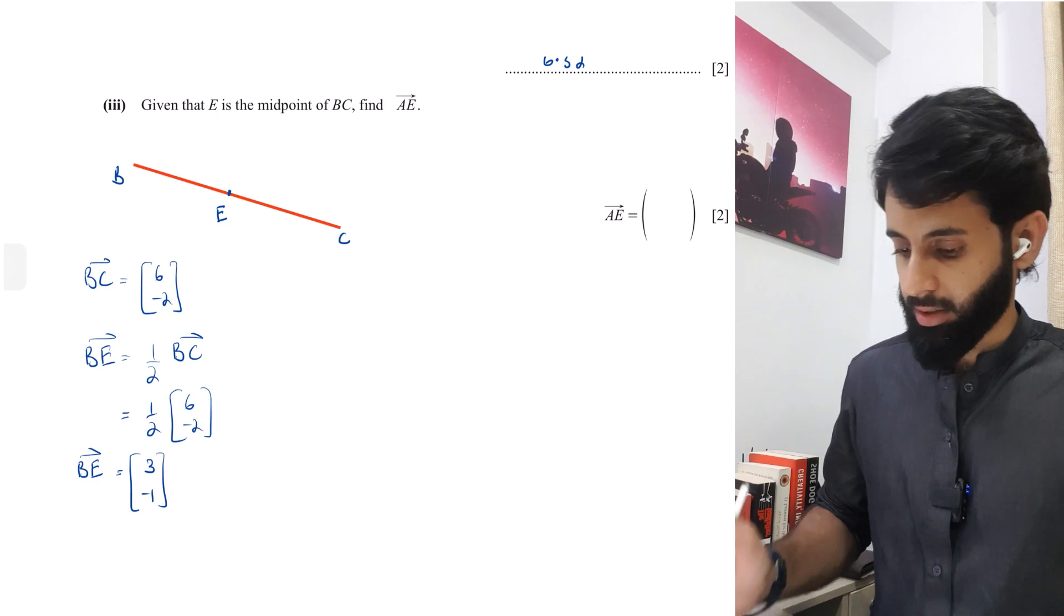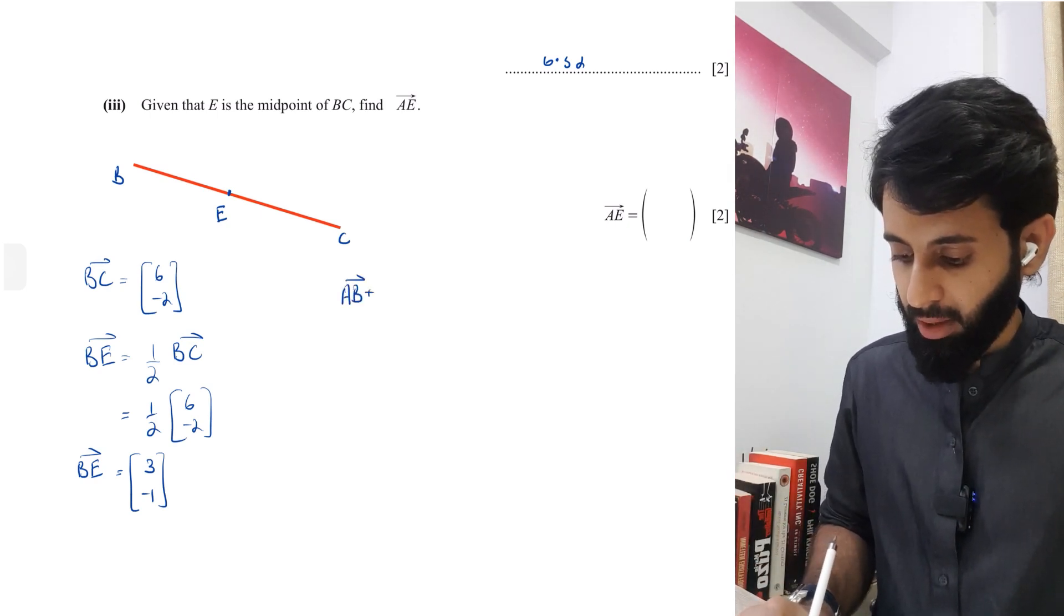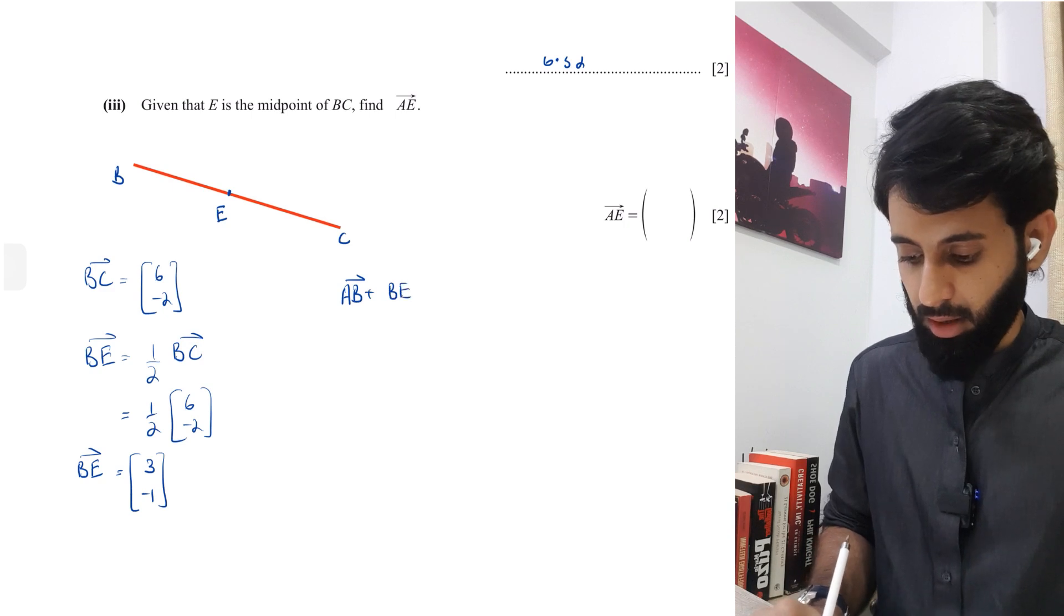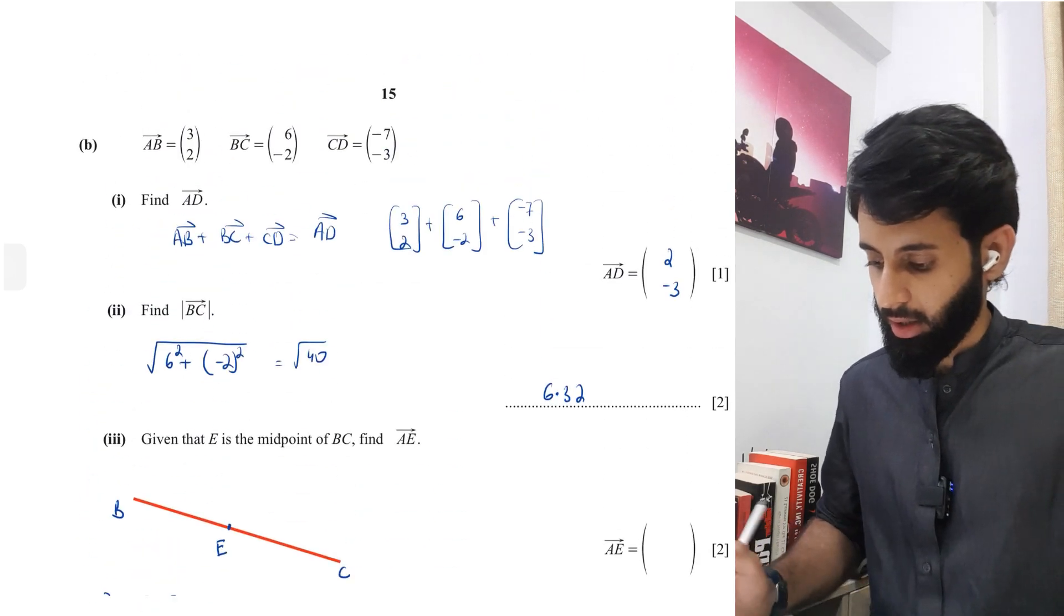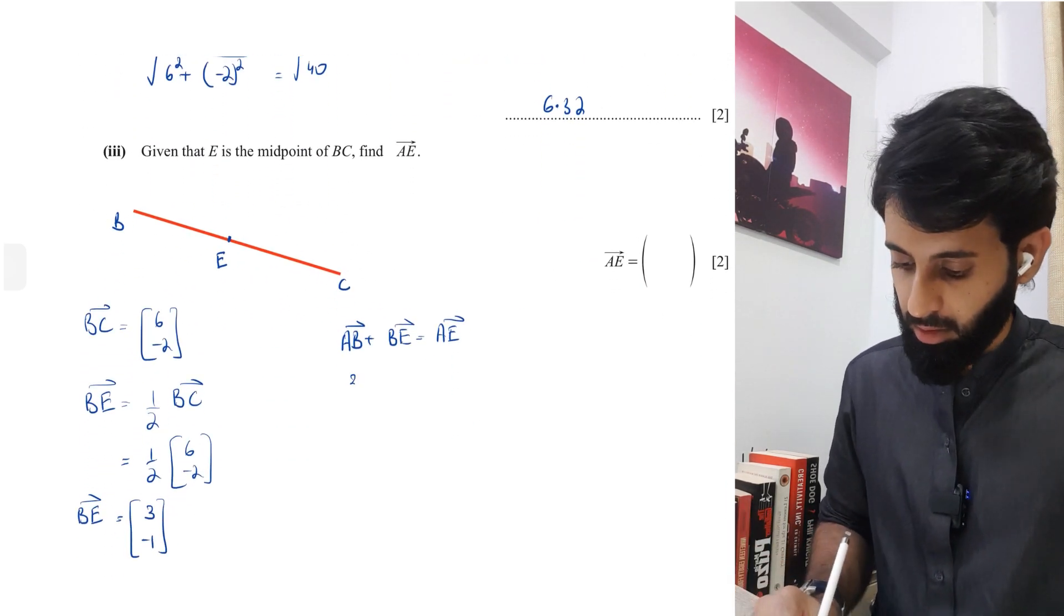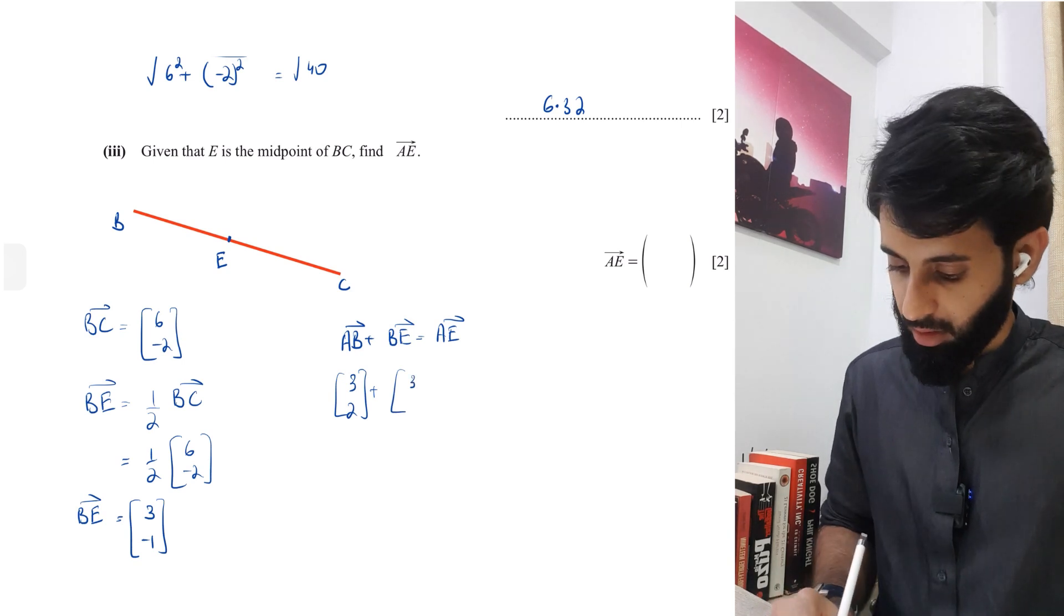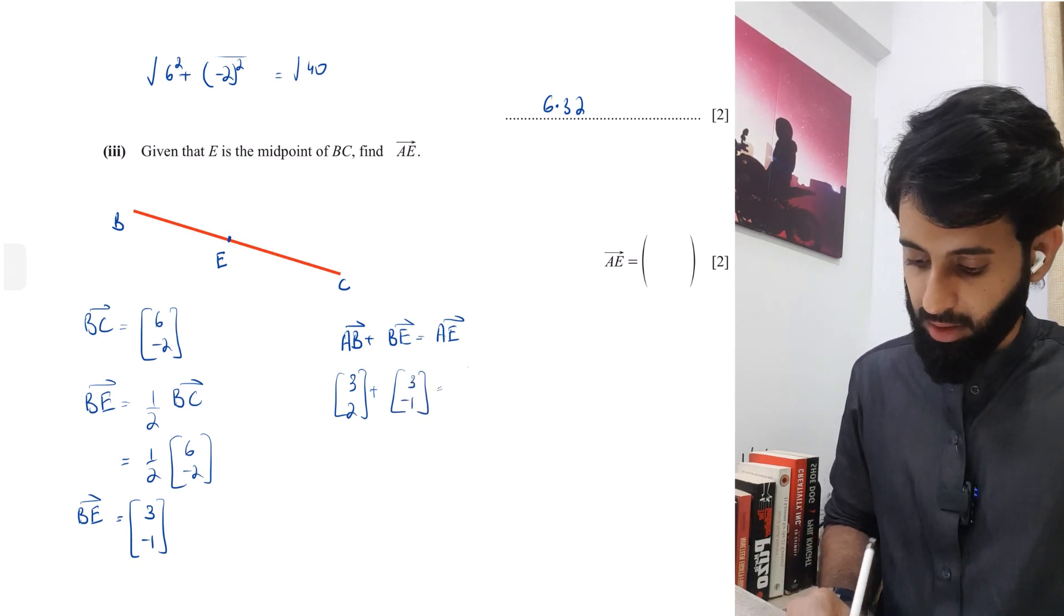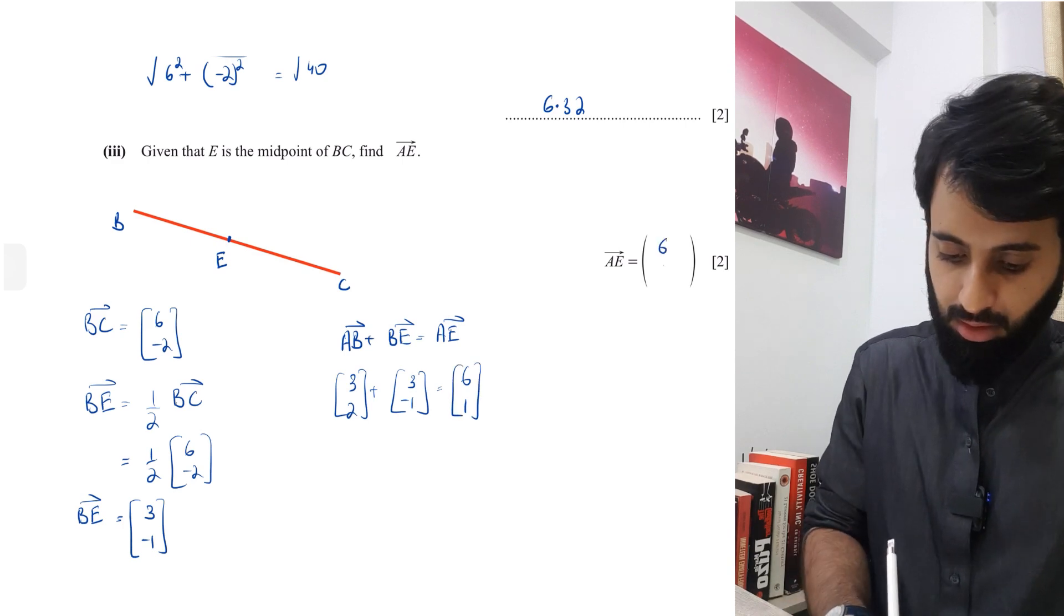Now you have to find out AE. So you can do AB plus BE, and using head to tail rule, this becomes AE. Now do I have AB? Yeah, I do. Three and two. Do I have BE? Of course I do. It's three and minus one. So three plus three is six, two plus minus one is one. So your final answer is six and one. So this was not too difficult.